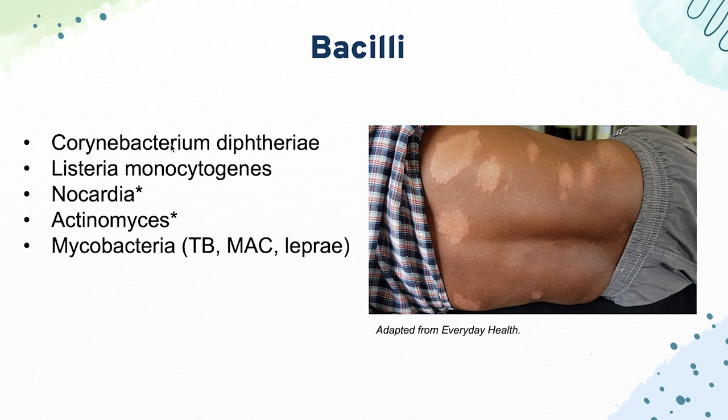Finally, we have our mycobacteria, like TB, Mycobacterium avium complex, and Mycobacterium leprae. All of these are acid-fast. The most important is probably TB. They usually test it in scenarios commonly affected by TB — like a nursing home, jail, or a country with poor sanitation — and patients usually present with fever, weight loss, and night sweats.